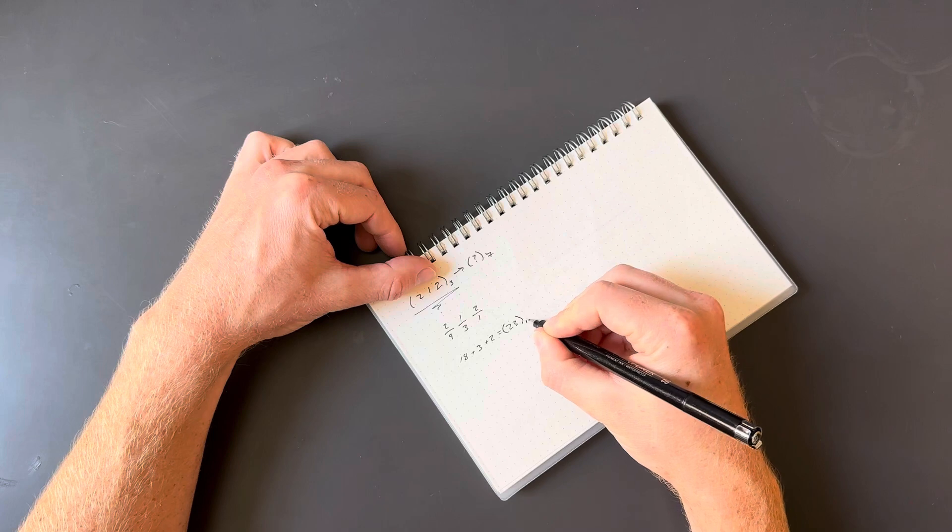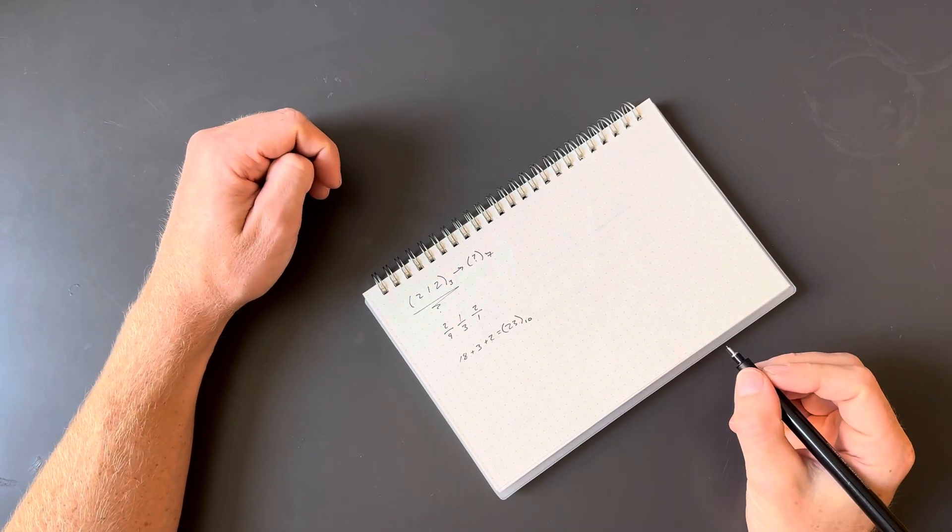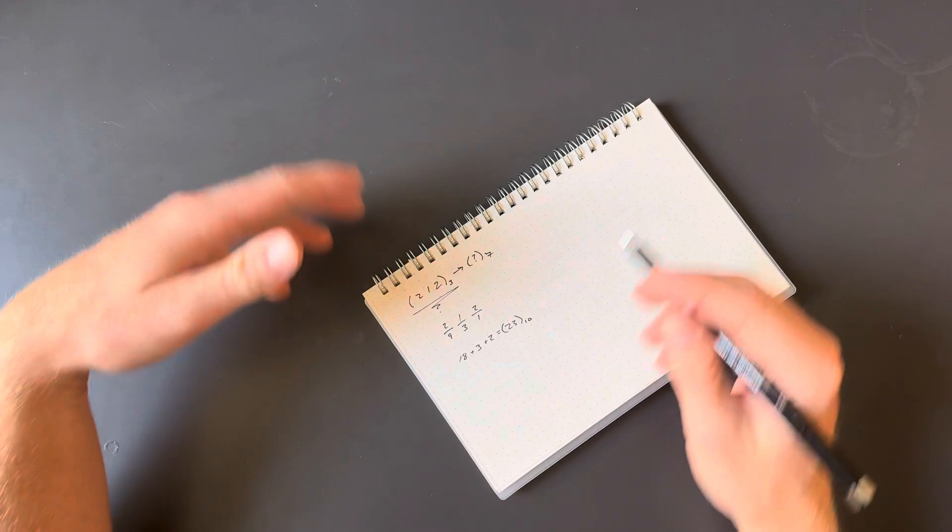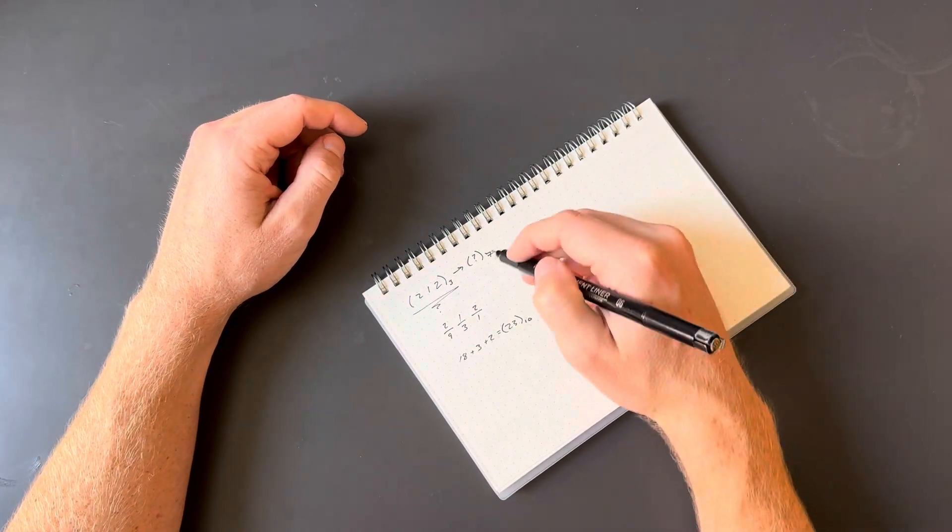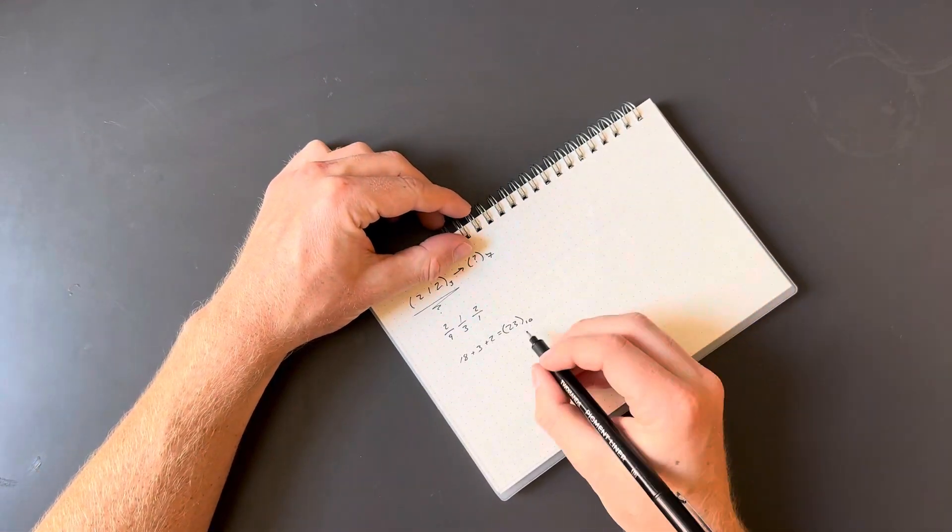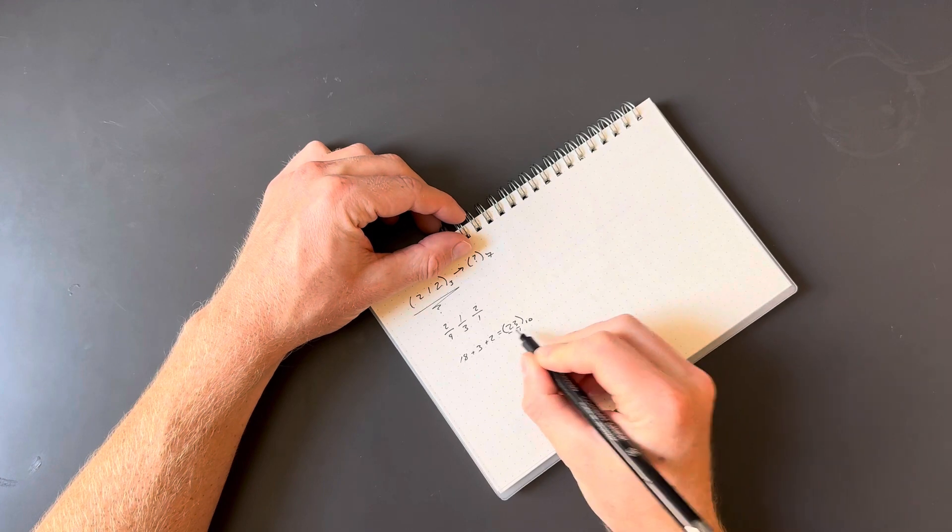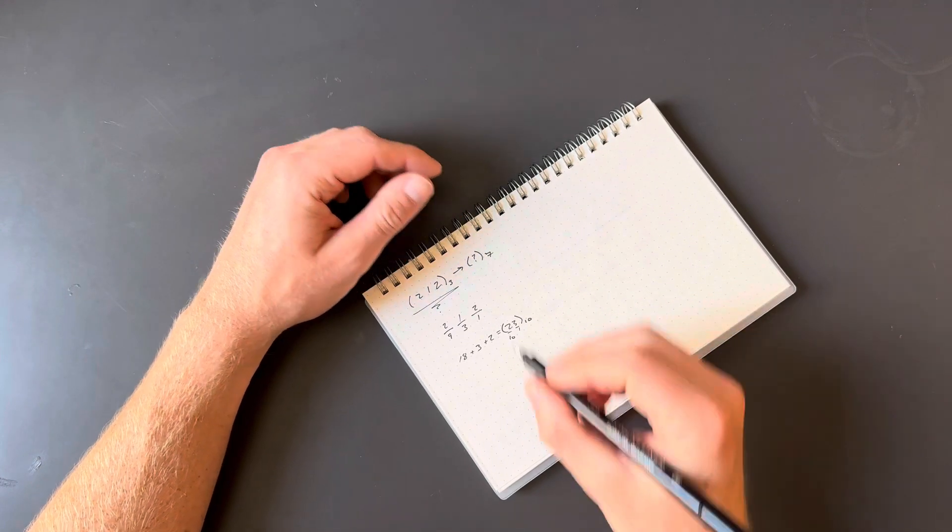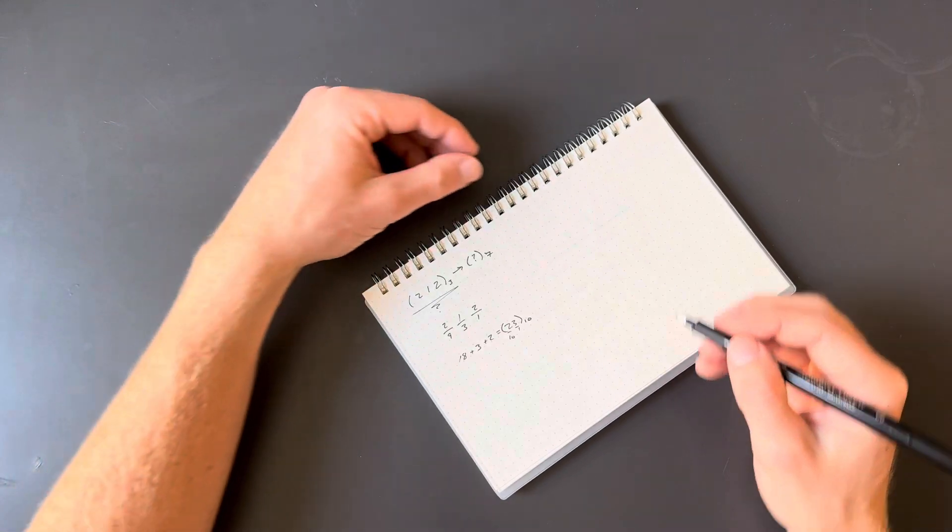Now that is our decimal representation of this number. From here, we can use a similar process to get from the decimal system to base 7. So in base 10, obviously, we have a ones place and a tens place. But we want to figure out what this number is in base 7.